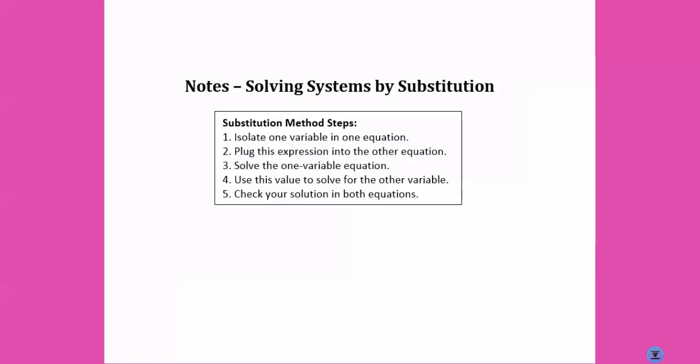All right, solving systems by substitution. First step, isolate one variable in one equation. So make sure one equation has one variable by itself. We're going to plug this expression into the other equation. We're going to solve the equation we have left now. We only have one variable in it. Then just like elimination, we're going to use that value to solve for the other variable. And we can always check our solutions.